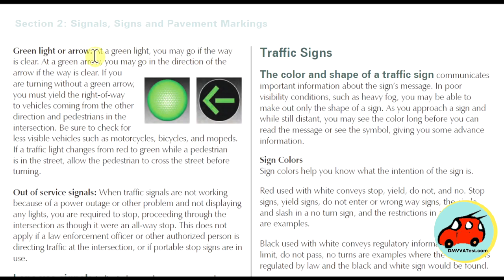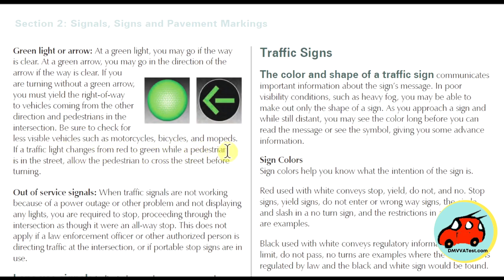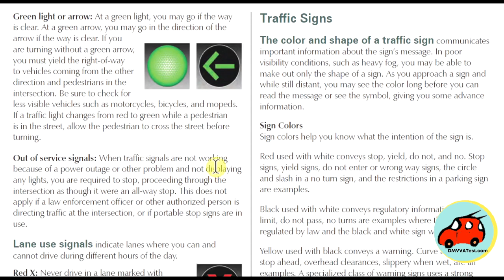If you see a green light or arrow, you may go through it if the way is clear. At a green arrow, you may go in the direction of the arrow if it's clear. If you're turning without the green arrow, you must yield the right-of-way to vehicles coming the other direction and pedestrians in the intersection — and check for motorcycles, bicycles, and mopeds. If the traffic light changes from red to green while a pedestrian is in the street, allow the pedestrian to cross before turning.